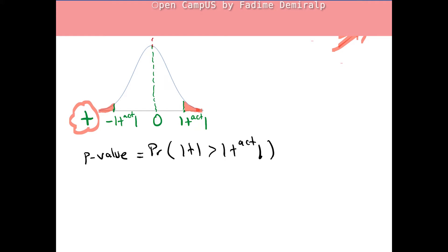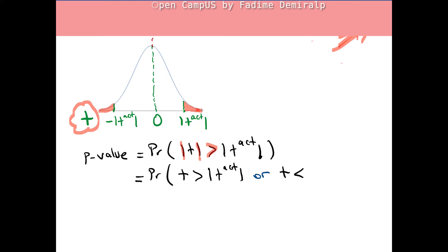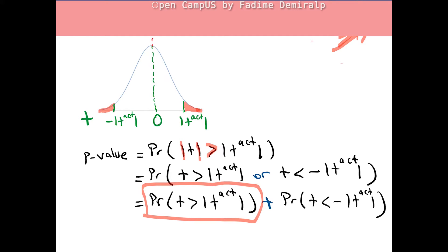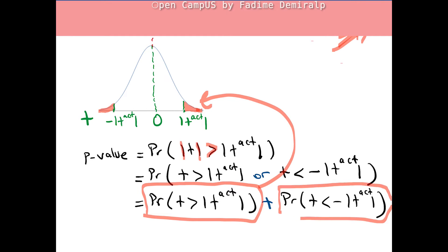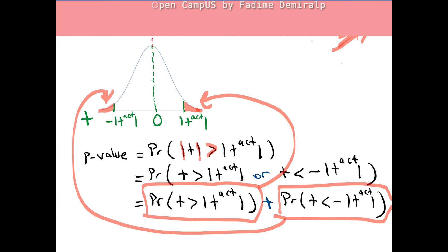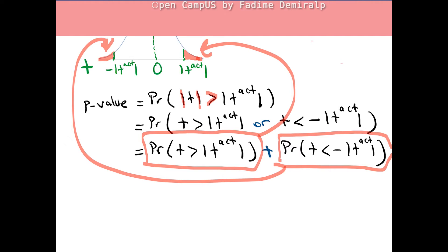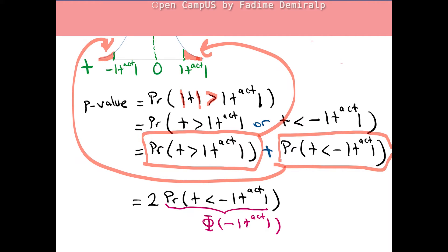Mathematically, this probability involves an absolute value inequality: either t is greater than the right-hand side or t is less than the negative of the right-hand side. The first probability is the area in the right tail; the second is the area in the left tail. Since these areas are identical, we can write the p-value as two times the area in the left tail — that is, 2 times Φ of negative |t-actual|, where Φ is the standard normal cumulative distribution function.